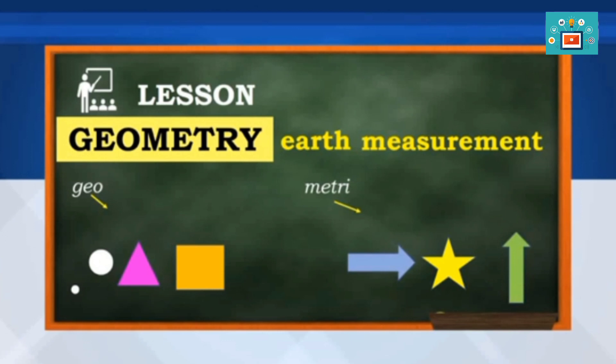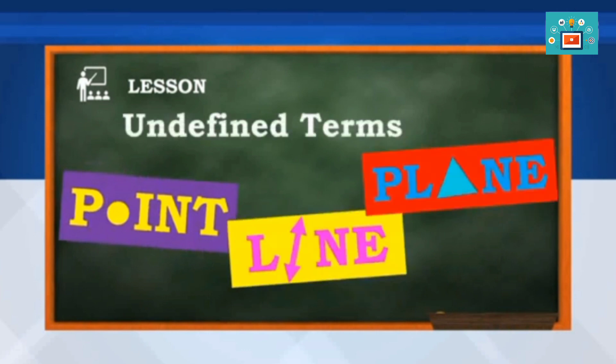It is also a branch of mathematics which deals with the sizes, shapes, positions, and properties of all things around us. The most common geometric figures are point, line, and plane. They are considered undefined terms in geometry since they are simply ideas. These terms serve as basis for defining other geometric terms.